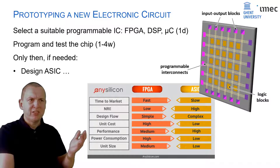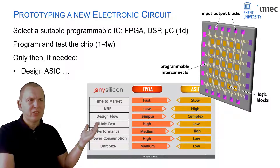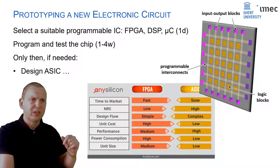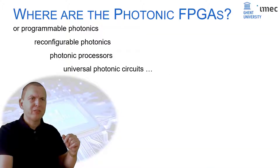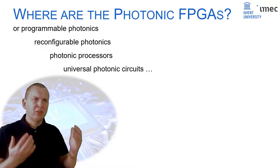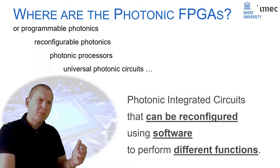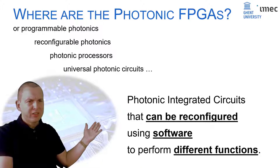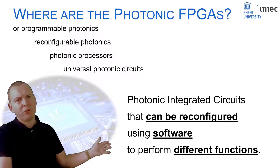FPGAs — field programmable gate arrays — essentially consist of programmable logic blocks which you can just connect in software. So where is the photonic equivalent of an FPGA? Where are photonic integrated circuits that can be reconfigured in software to perform different functions?